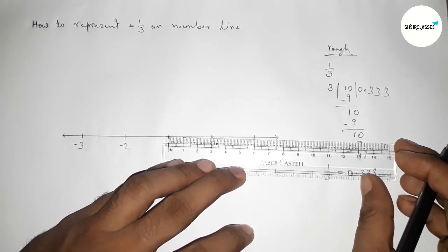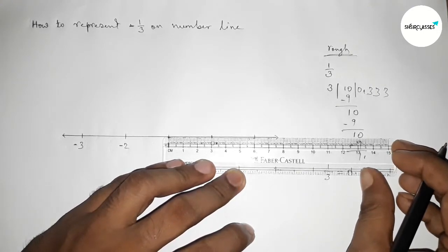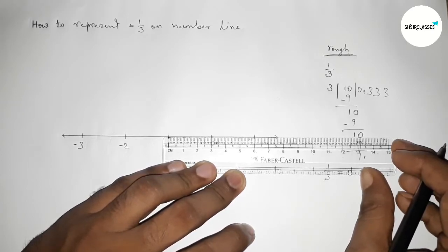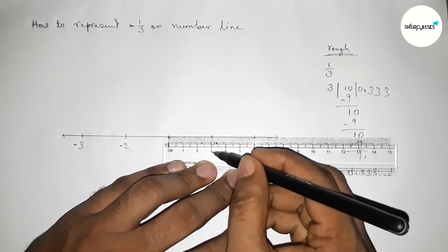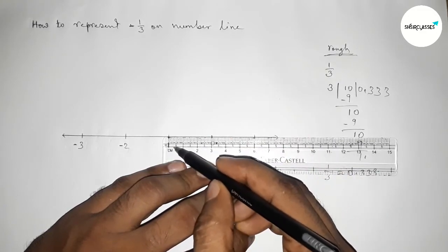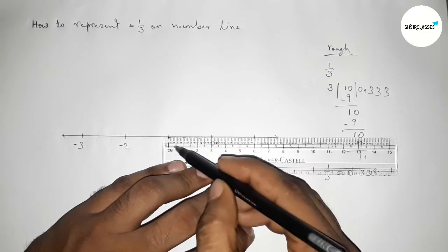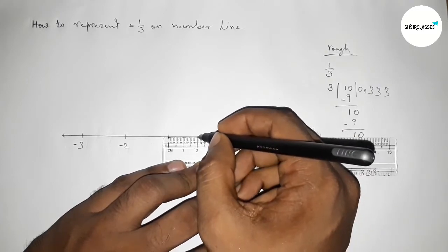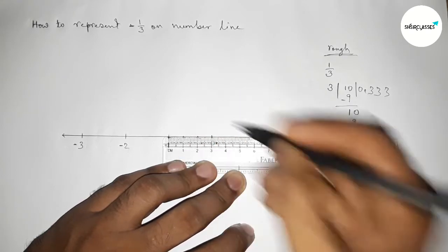Now dividing the length between zero and minus one into three equal parts. The total equal parts between zero and minus one equals thirty, because the length is three centimeters, so the total parts are thirty. If we divide thirty by three: the first part is ten, the second is twenty, and the third is thirty — so the first mark is one-third and the second is two-thirds.